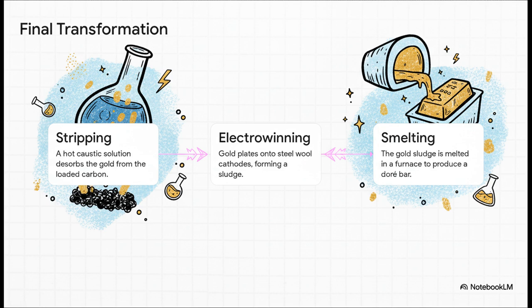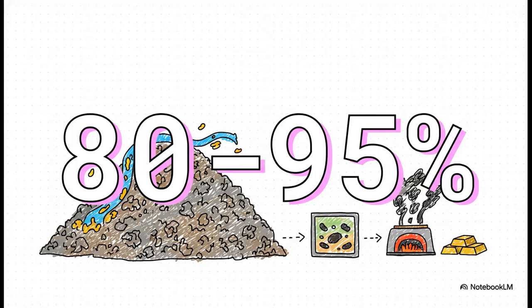And finally, that sludge is dried out, mixed with some stuff called flux to help separate impurities, and melted in a furnace at incredibly high temperatures. And this? This is the payoff. What pours out of that furnace is called a dory bar. It's not pure gold yet, but it's pretty darn close. Usually around 80-95% gold, with the rest being mostly silver.